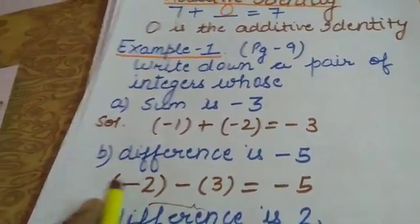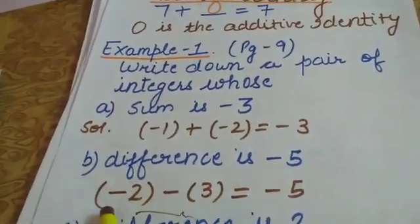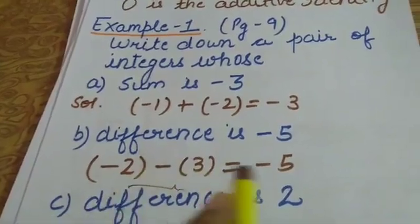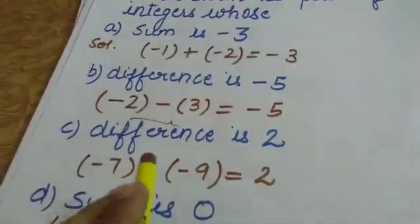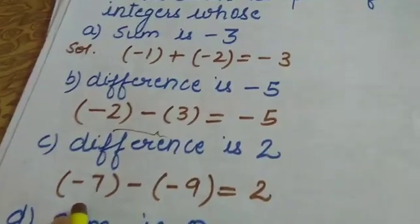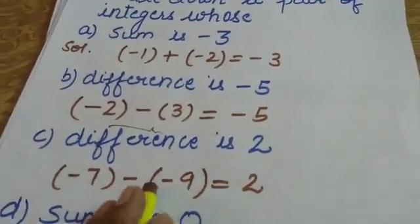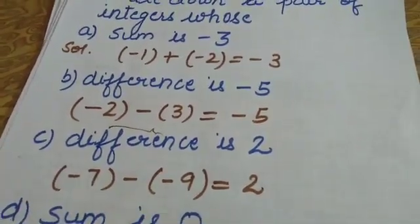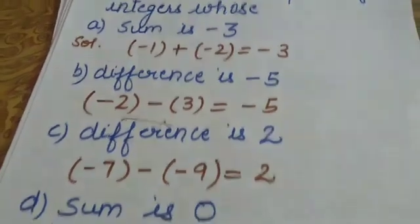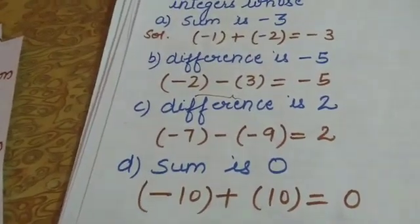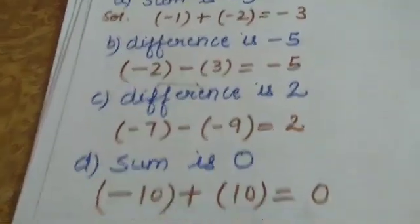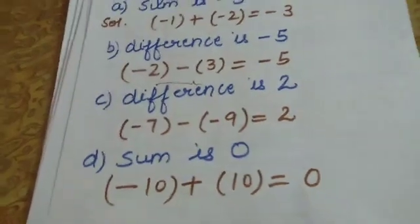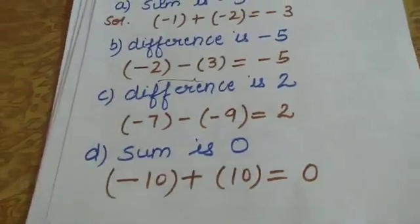Part (c): write a pair whose difference is 2. Take minus 7 minus minus 9: minus minus becomes plus, so minus 7 + 9 gives you 2, satisfying the condition. Part (d): write a pair whose sum is zero. For example, minus 10 plus 10 gives zero. Or 7 minus 7 gives zero. You can think of infinite such examples.